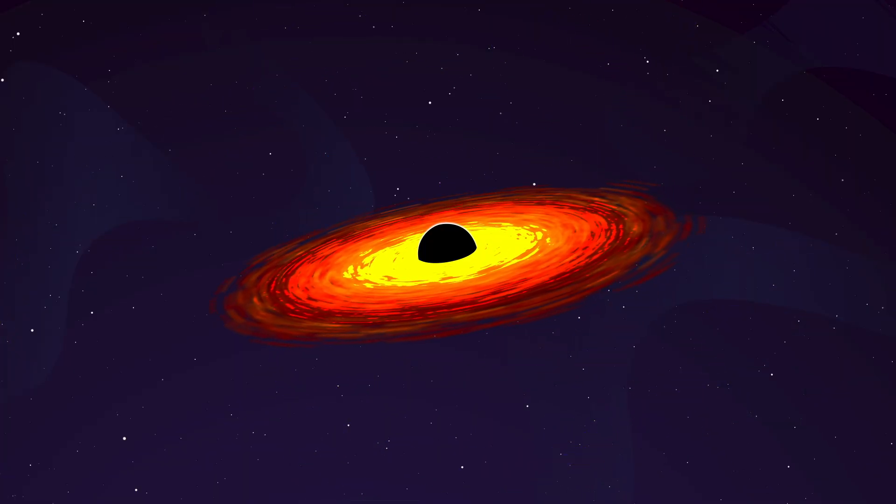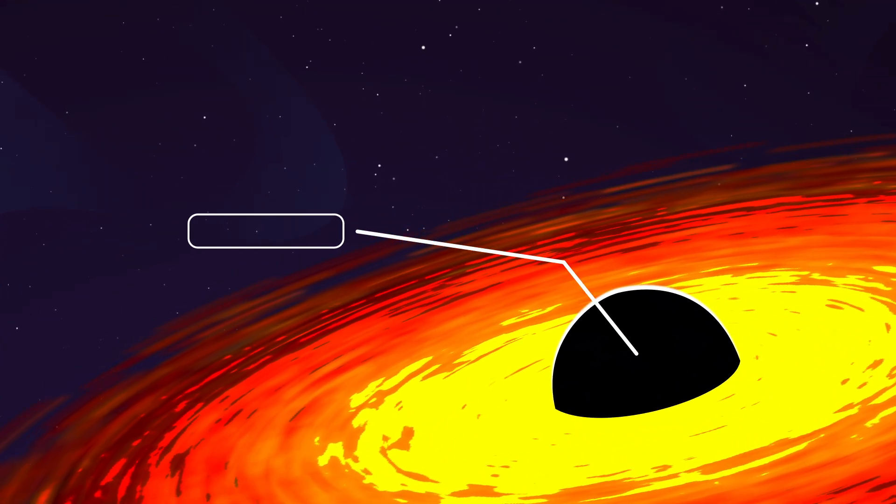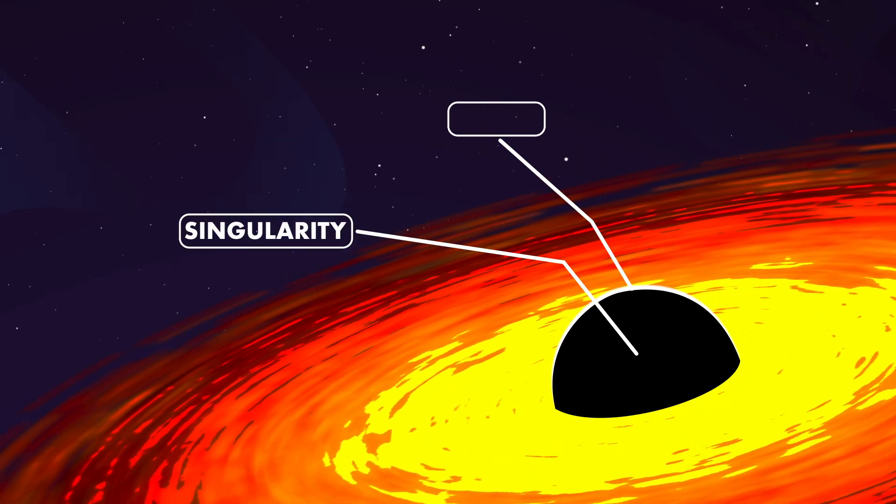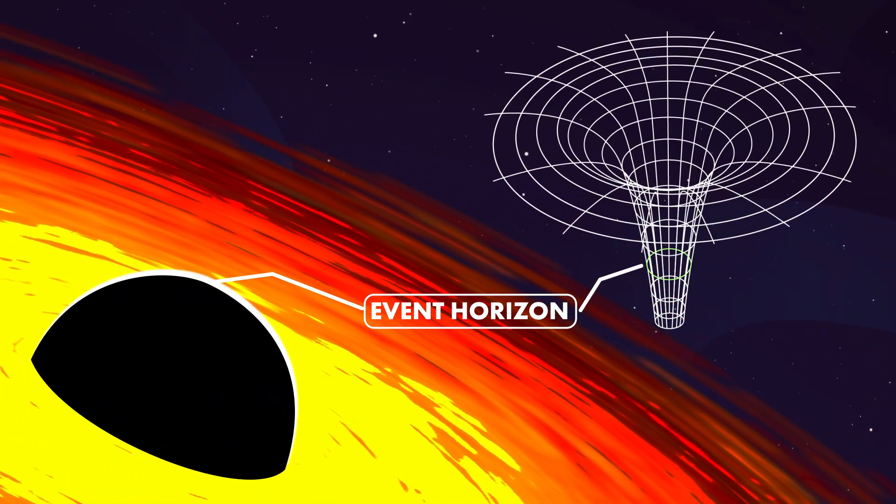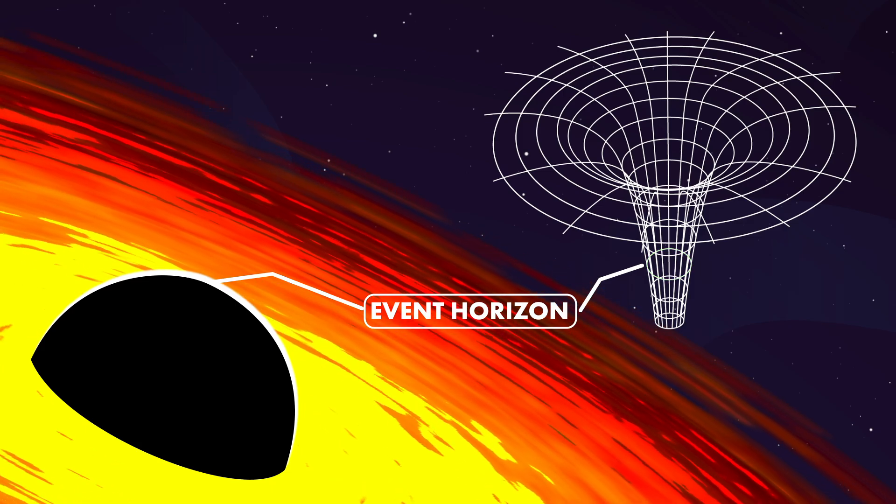Sometimes, a supernova leaves behind a stellar remnant that collapses into a tiny, extremely dense region known as a singularity. Around the singularity forms a spherical, critical boundary called the event horizon. The event horizon is sometimes known as the point of no return, because the escape velocity at this point is equal to the speed of light.